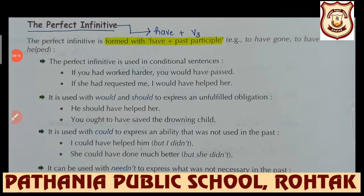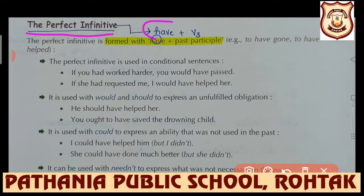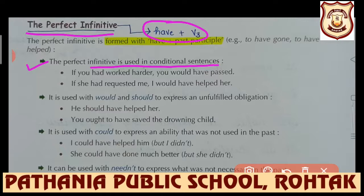Our next concept is the perfect infinitive. The formation of the perfect infinitive is 'have' plus third form of the verb. The perfect infinitive is used in conditional sentences. If you remember from previous class, we had learnt about conditional sentences with four conditions: type 0, type 1, type 2, and type 3. In that case, perfect infinitive is used.